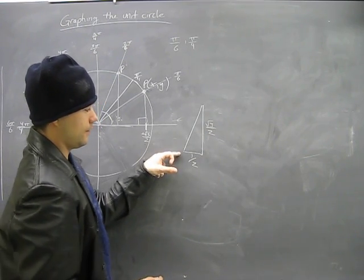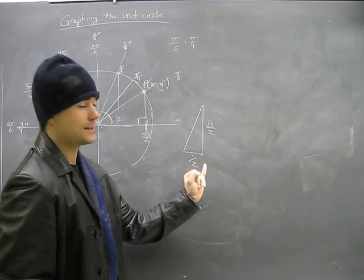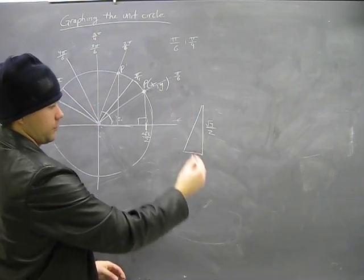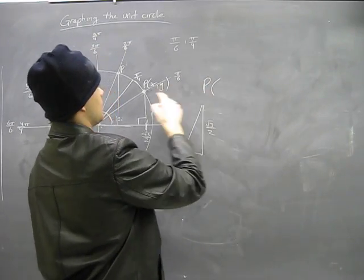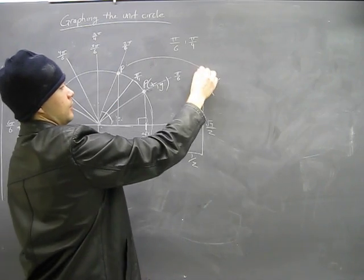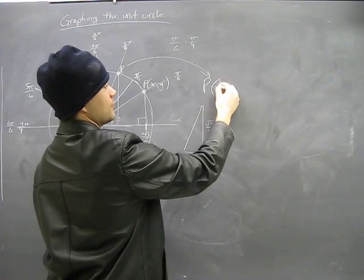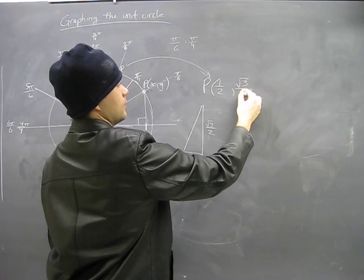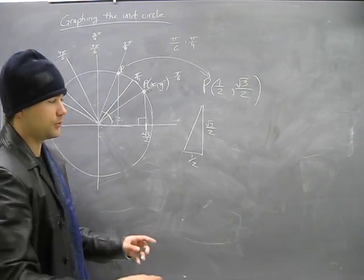Well, on this triangle, you have 1 half and root 3 over 2. So we've got an x distance of 1 half value and a y distance of positive root 3 over 2. So our point p on this one here is going to be an x value of positive 1 half and a y value of that. Simple as that.